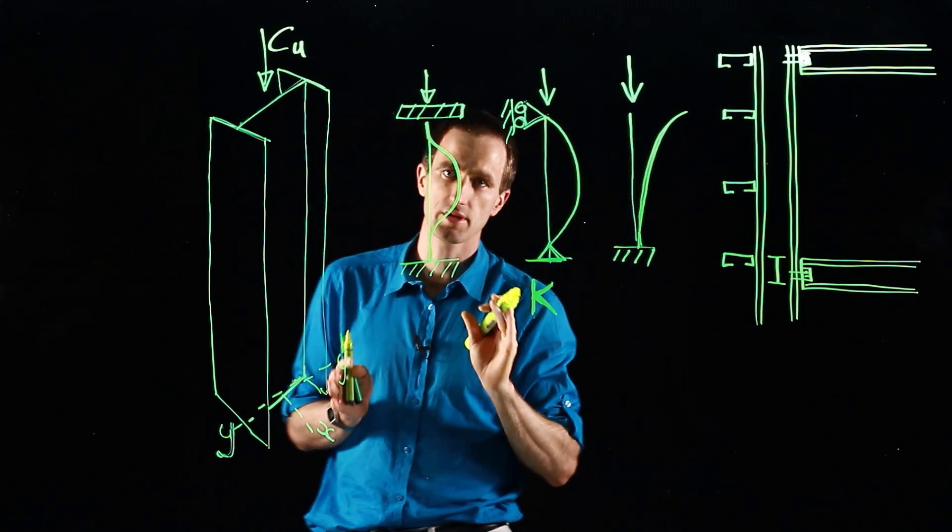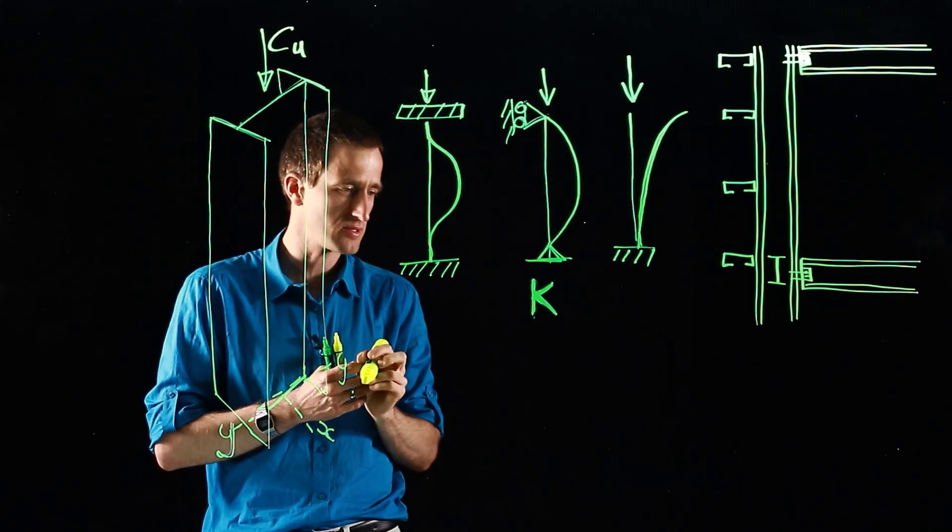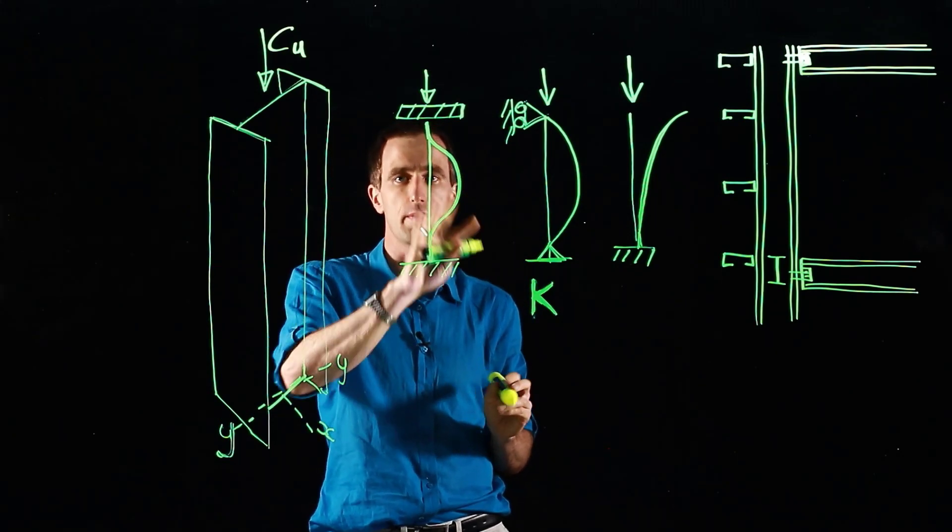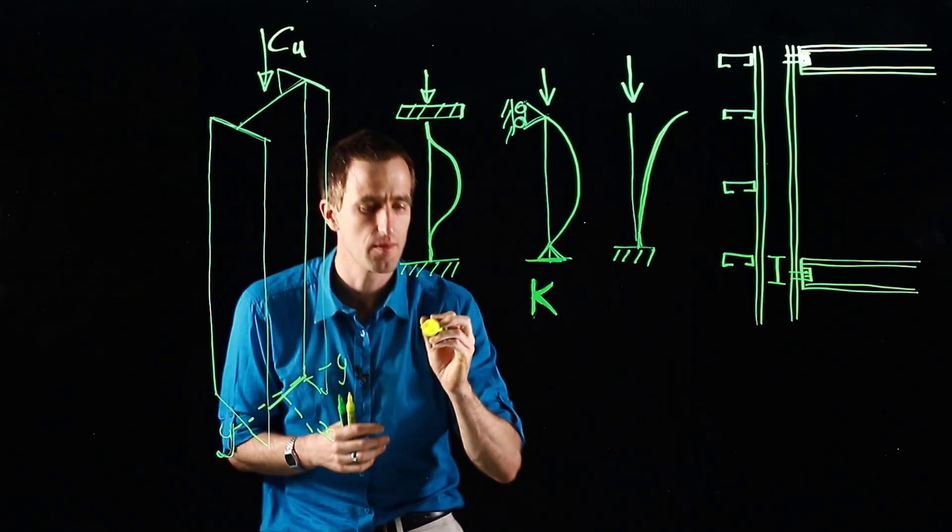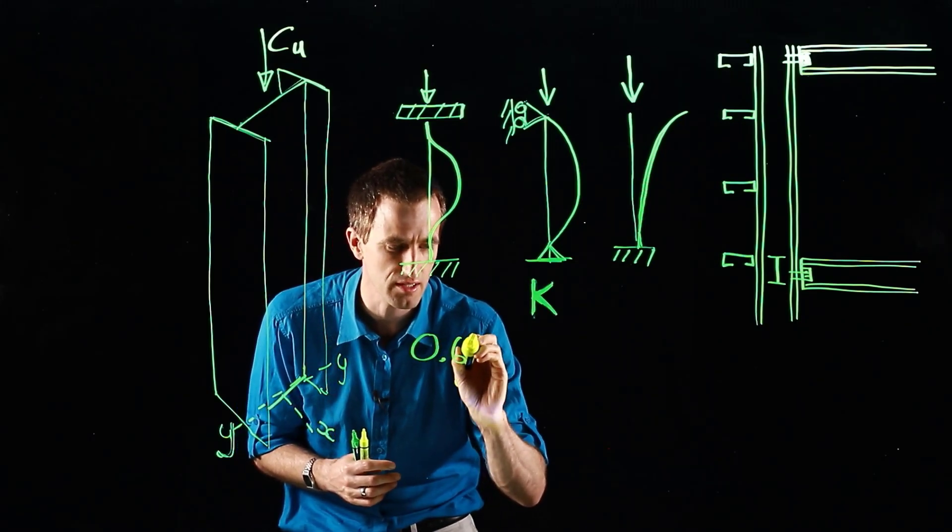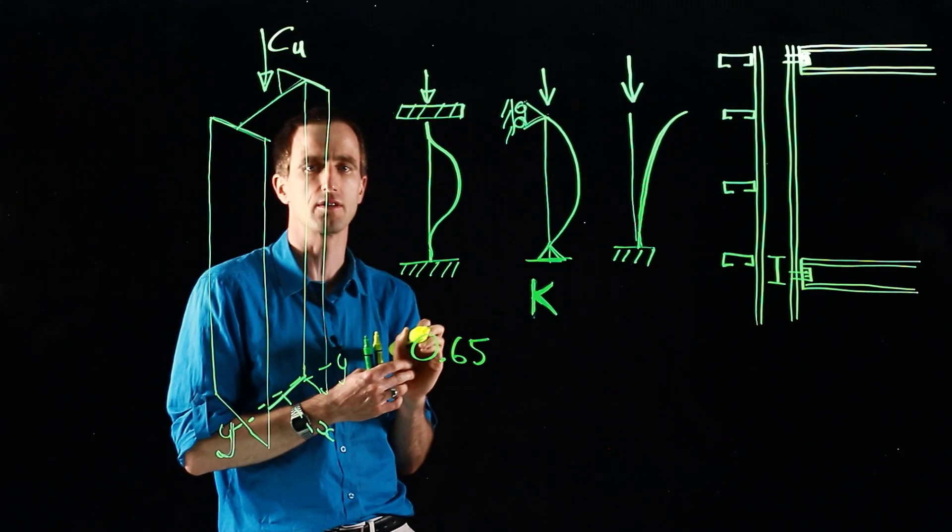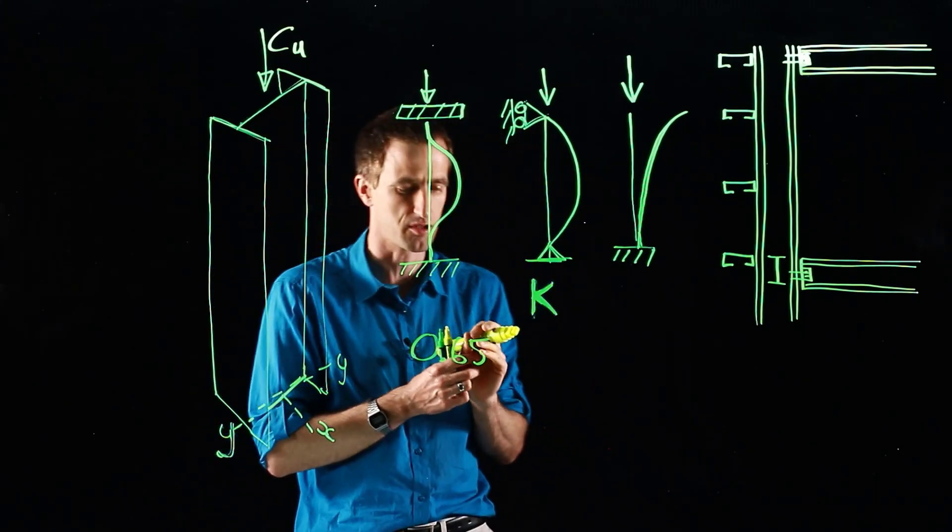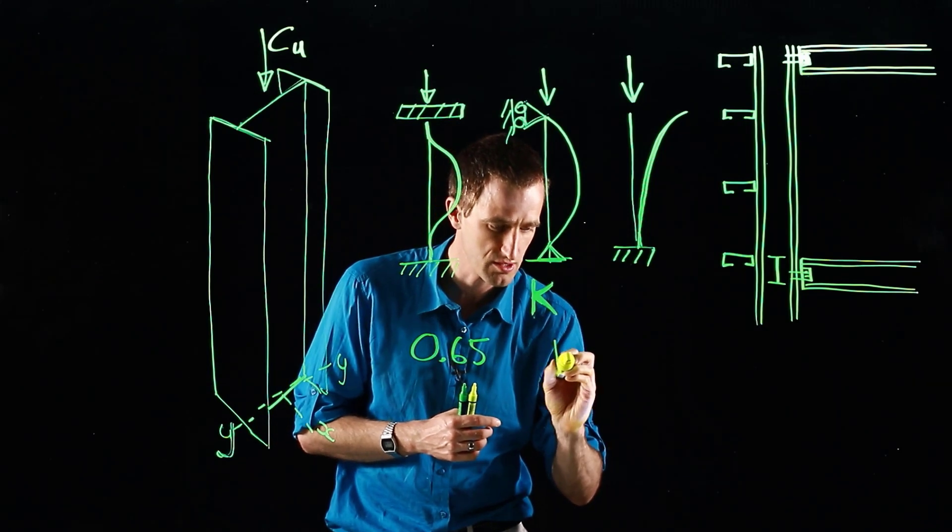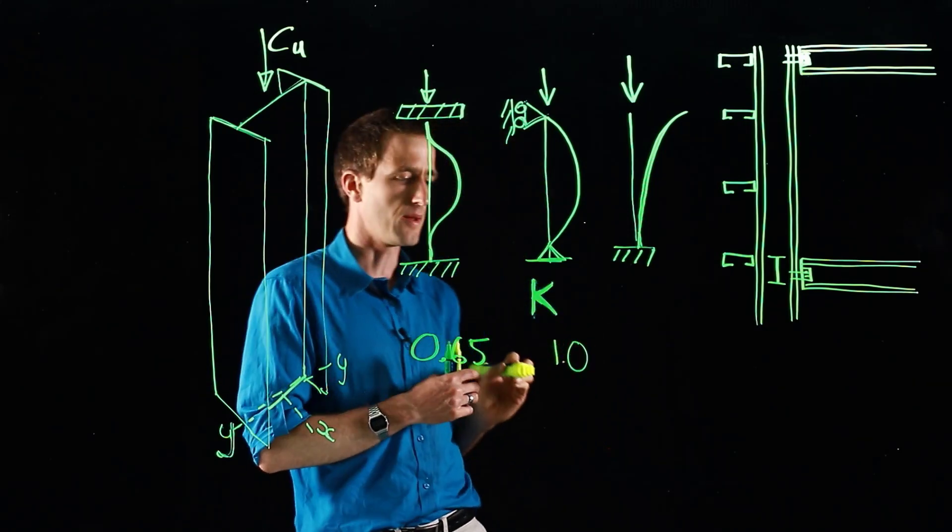When it comes to steel design, we use the recommended design values. Now the theoretical effective length K for this would be about 0.5, but we'll use the 0.65 value to account for the fact that nothing is perfectly fixed in real life with bolt tolerances and all the rest of it. So we've got 0.65, then we've got our one factor, so that's a simply supported section effectively.